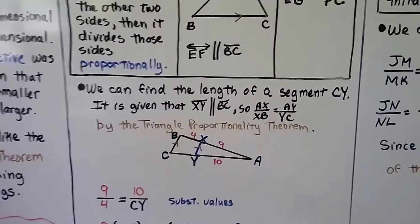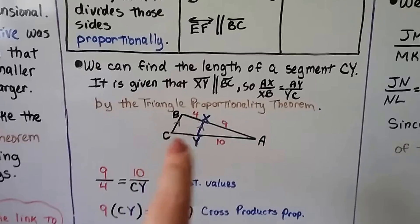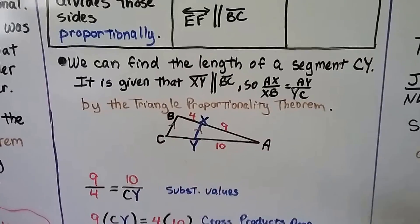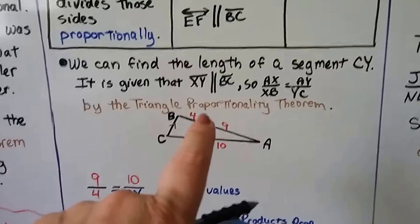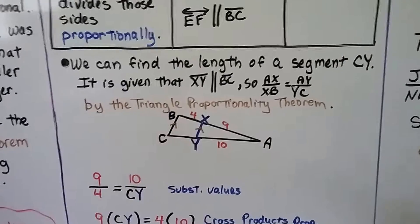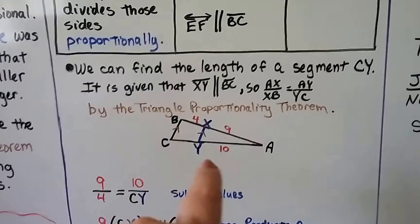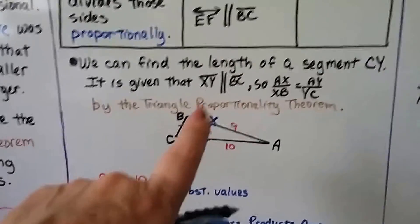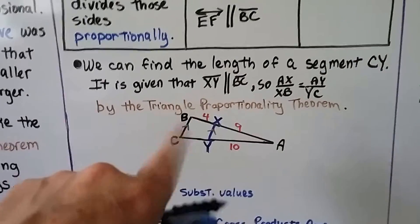We can find the length of a segment, CY or YC, and taking a look at the drawing, we can see that XY is parallel to BC. We see the parallel marks. And we see this is a four, that's a nine, that's a ten, but that's blank. We don't know what that is. So it's given that XY is parallel to BC.